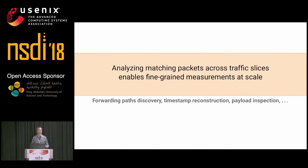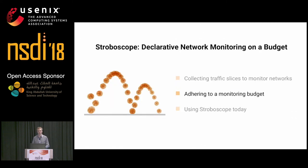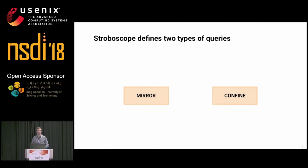Another big issue is that we are doing traffic mirroring — how do we make sure we are not breaking our own network? We have a whole algorithmic pipeline for this. We'll look at each of the two query types separately: the mirror query and the confined query.